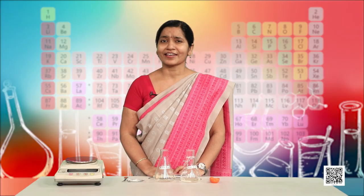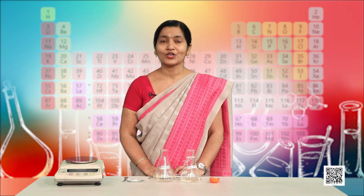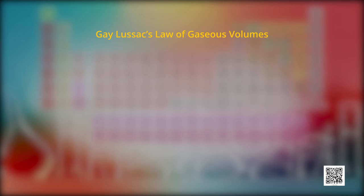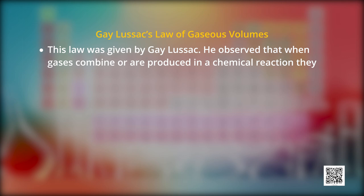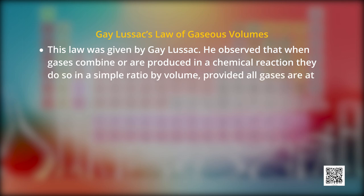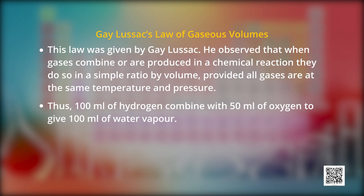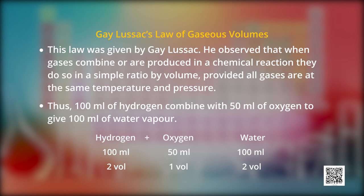Search for more examples where the law of multiple proportions is obeyed. Now let us discuss Gay-Lussac's law of gaseous volume. He observed that when gases combine or are produced in a chemical reaction, they do so in a simple ratio by volume, provided all the gases are at the same temperature and pressure. So when 100 milliliters of hydrogen combined with 50 milliliters of oxygen, it gives 100 milliliters of water vapor: 2H₂ + O₂ → 2H₂O.